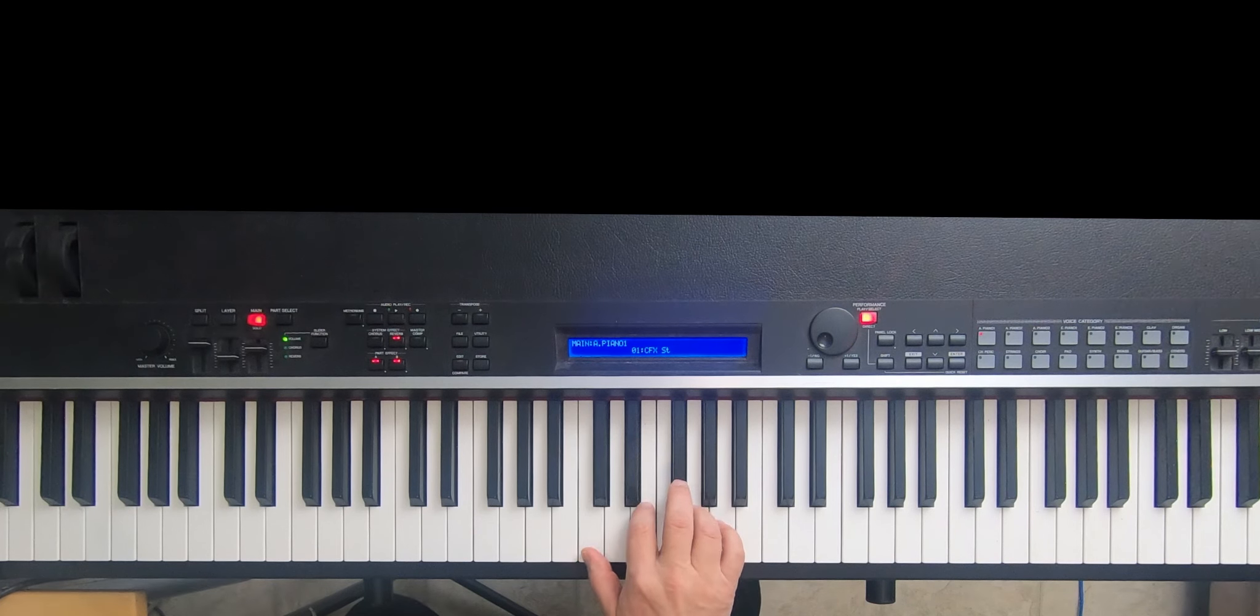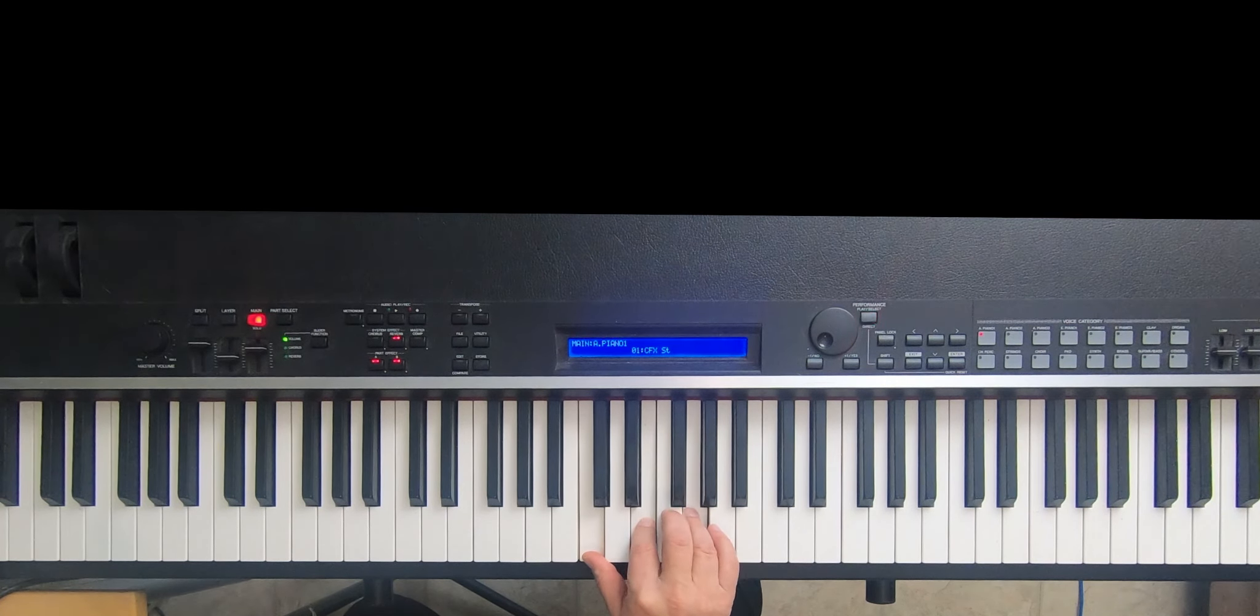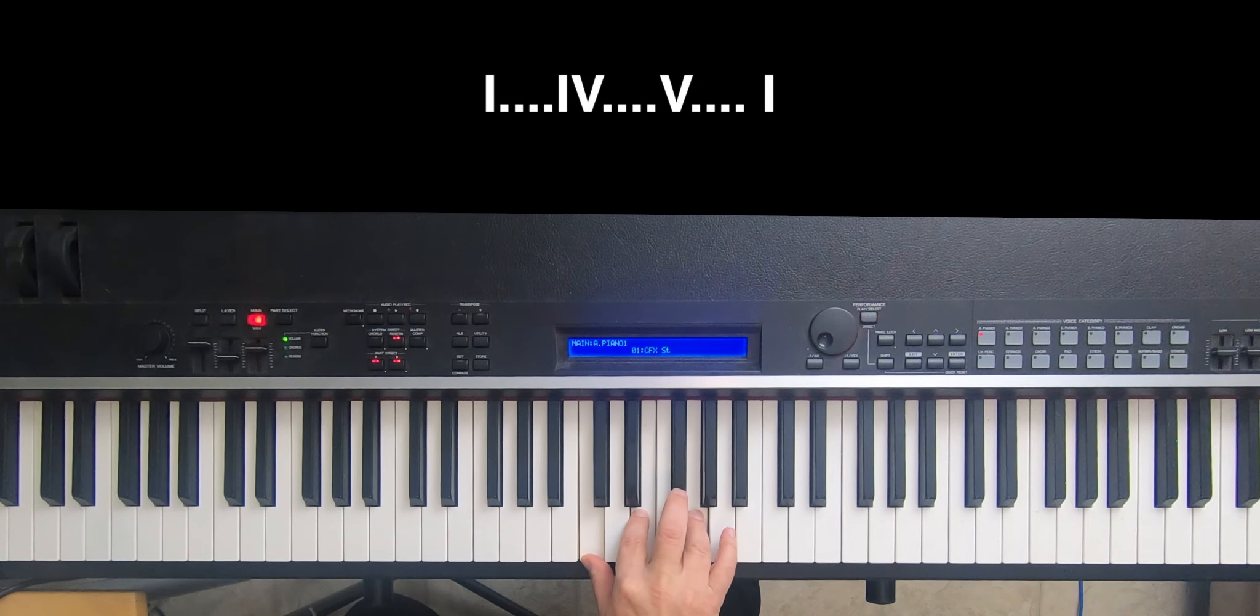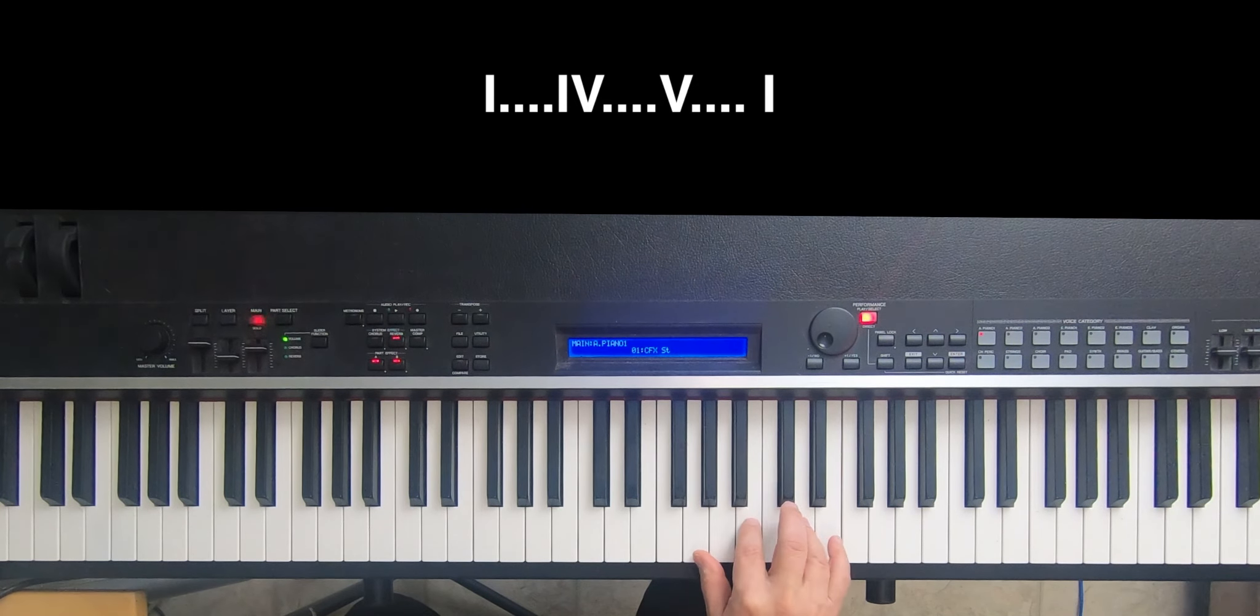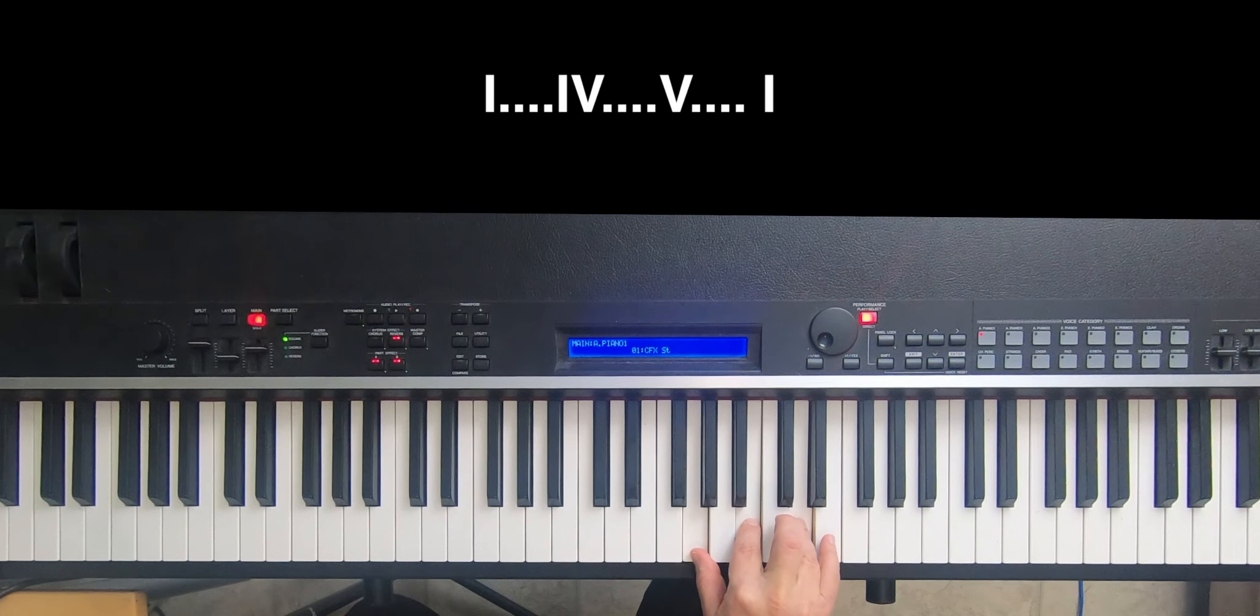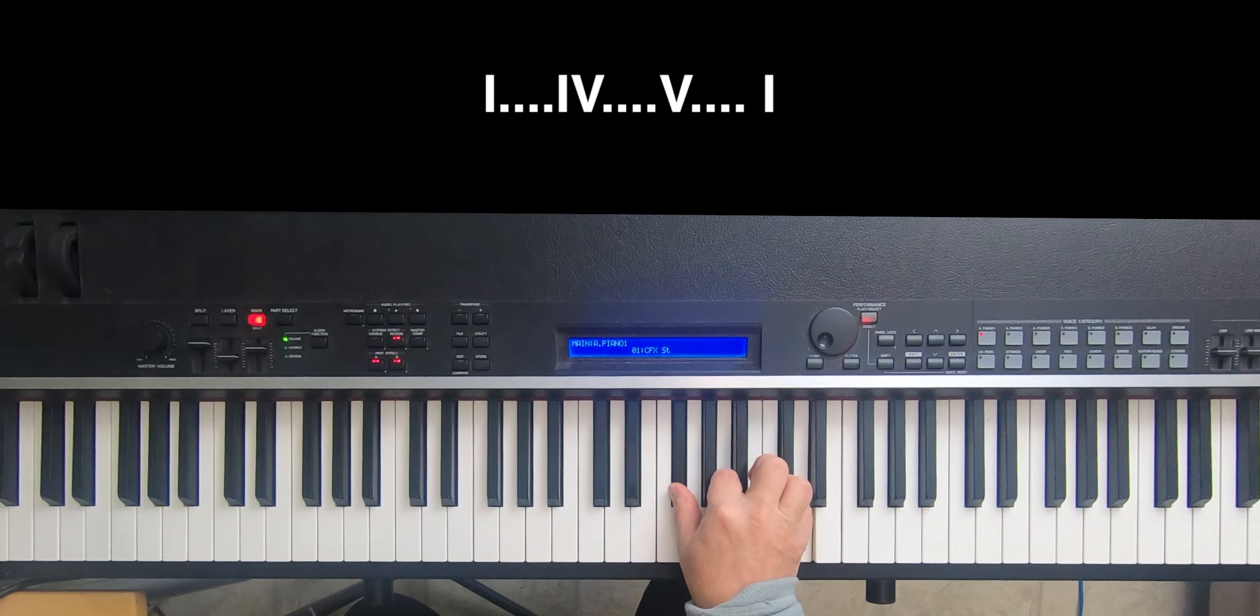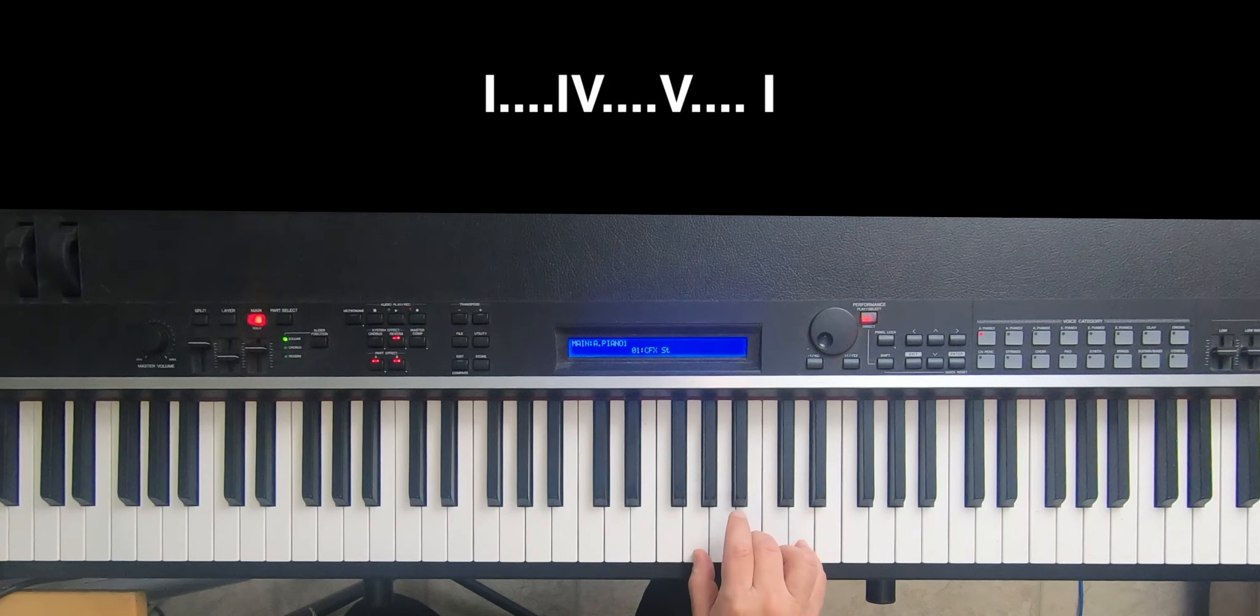And so now you have, and you can play them this way. One, four, five, one. And then we move up to the key of G. Now G is the one chord. C is the four chord, or the subdominant. D, D major, is the dominant, which leads us back to one. So here it is in C. Notice I'm playing inversions to make it easier. And then here.